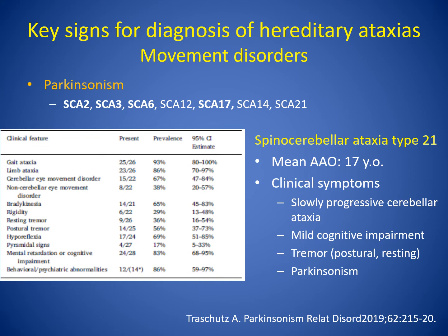SCA 21 causes slowly progressive cerebellar ataxia, mild cognitive impairment, and postural and/or resting tremor. Parkinsonism is thought to be rare in SCA 21, but according to a past literature review, 65% of SCA 21 patients had bradykinesia. Other Parkinsonian features seen in SCA 21 include rigidity and resting tremor. Parkinsonism seen in SCA 21 was reported to be not responsive to levodopa.